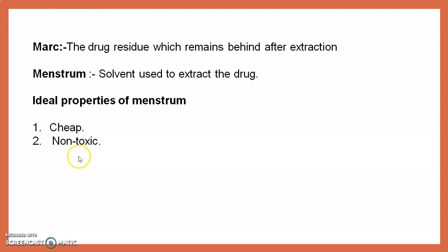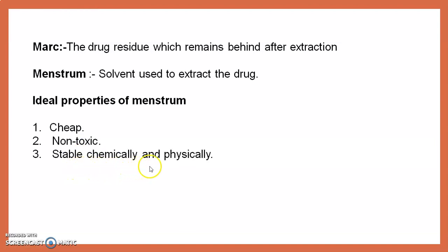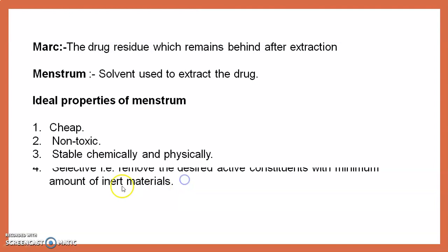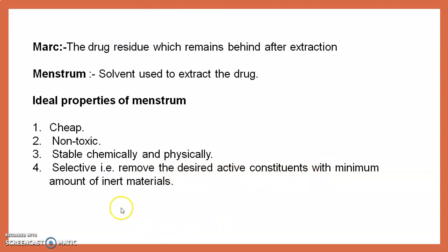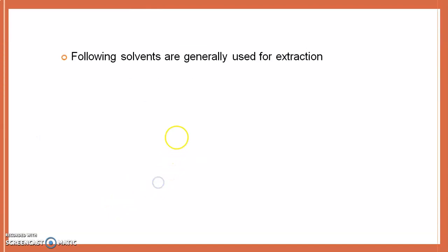The ideal properties of the menstruum: it should be cheap, it should be non-toxic, it should be stable chemically as well as physically. It should be selective — that means it should remove the desired active constituents with a minimum amount of inert material.